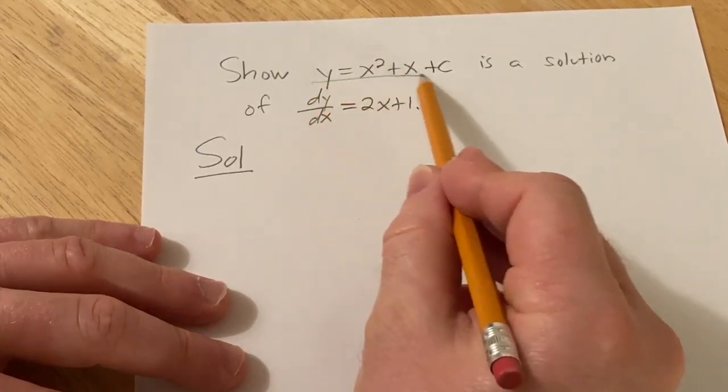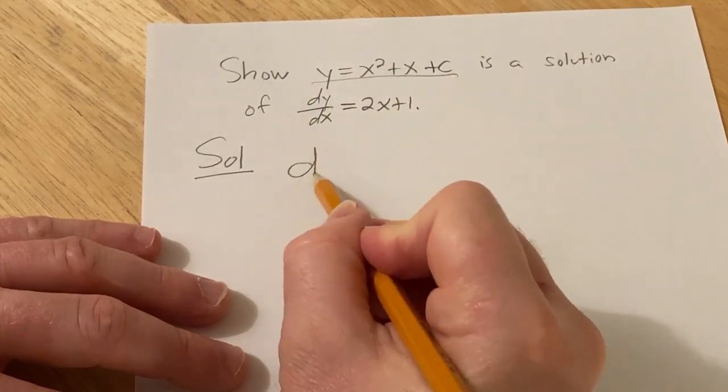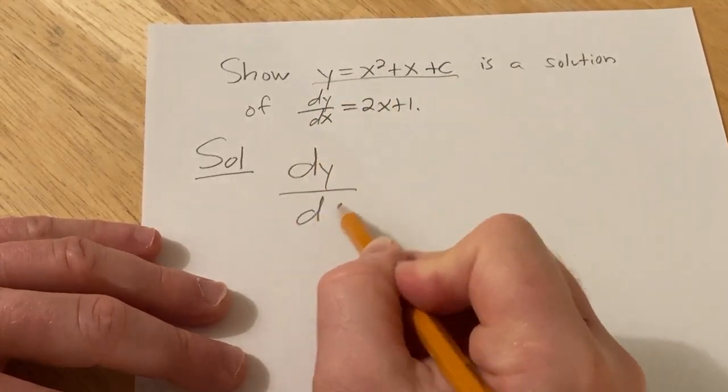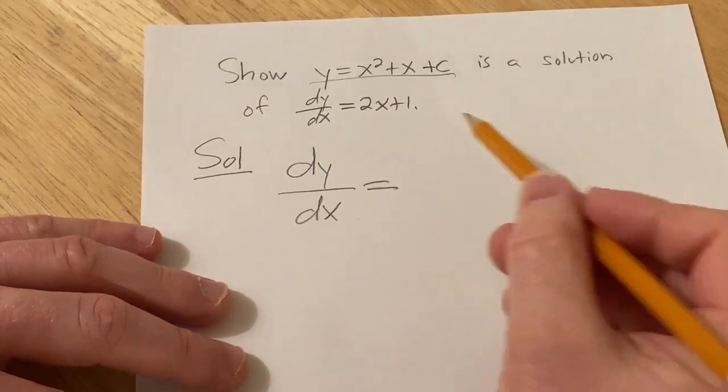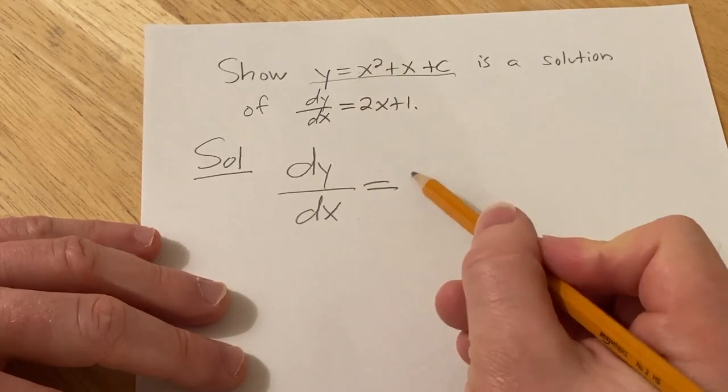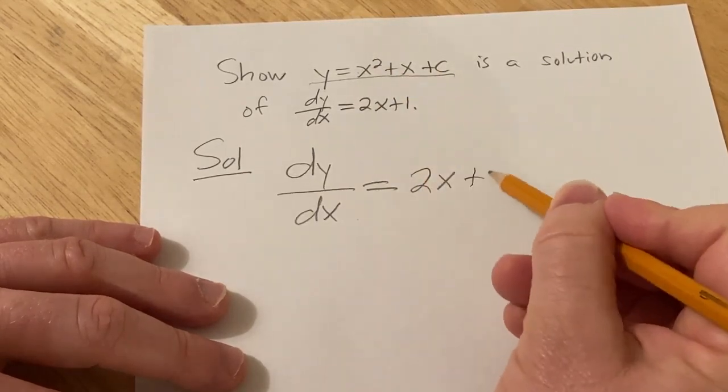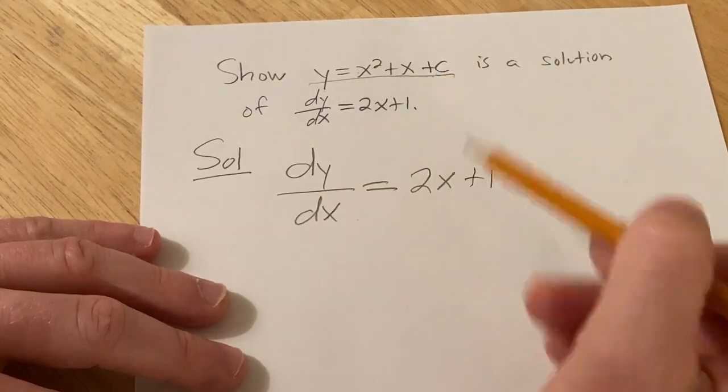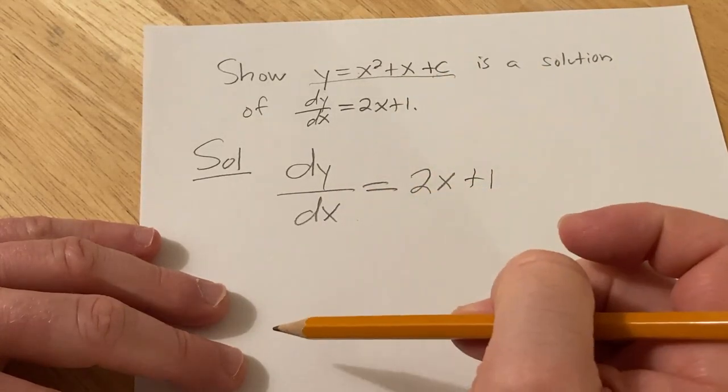So we have y equals x squared plus x plus c, that means the derivative of y with respect to x, well you just take the derivative. So here it'll be 2x using the power rule, the derivative of x is 1, and then the derivative of c is 0. So dy dx is 2x plus 1.